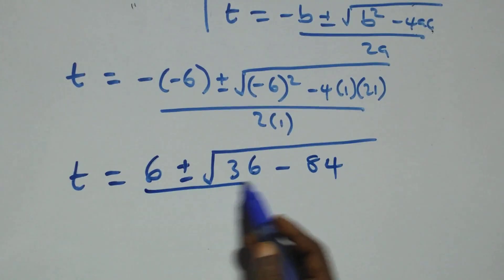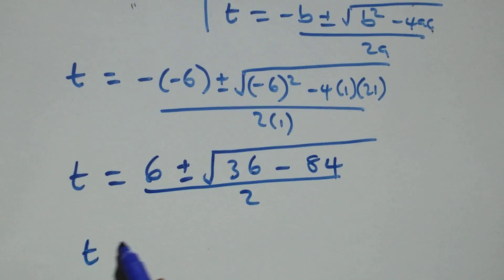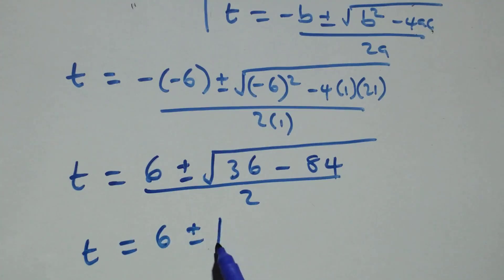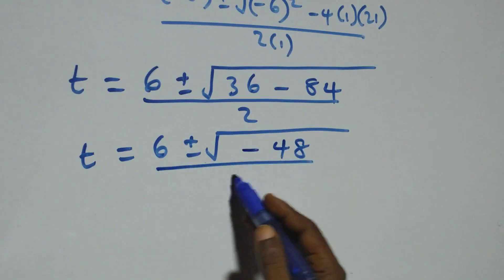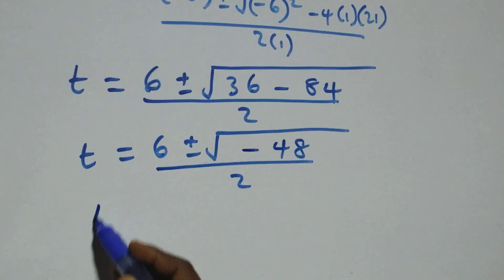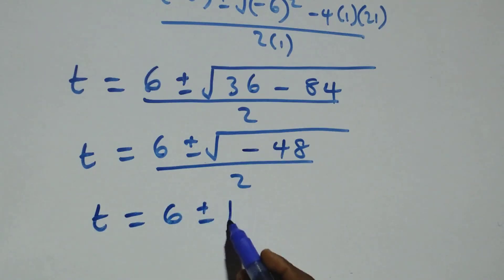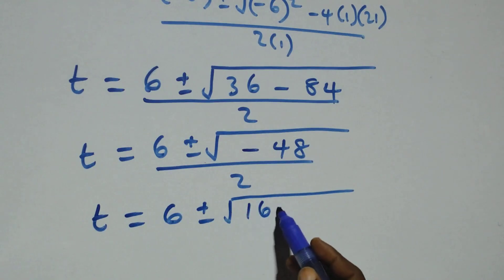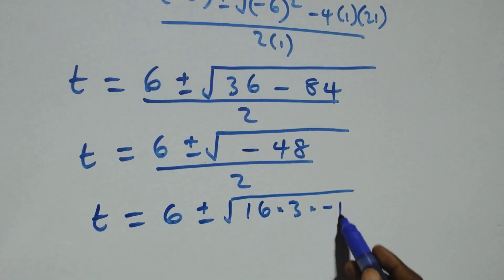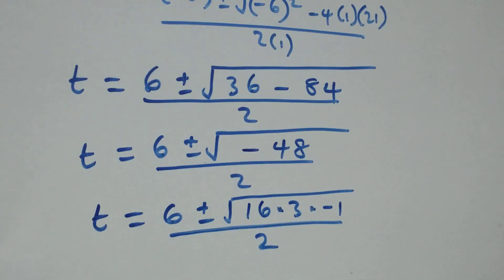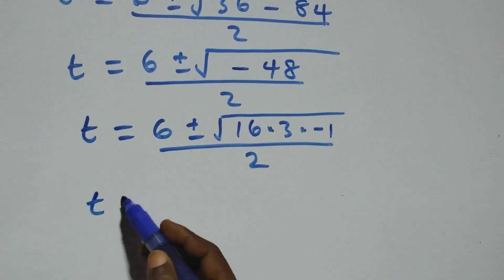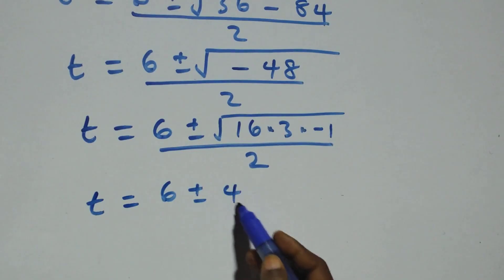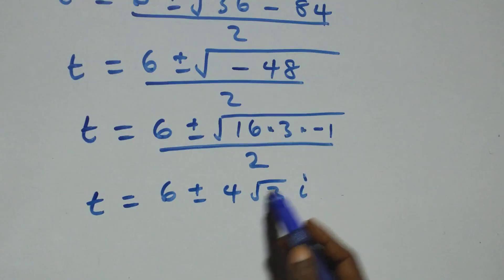This becomes t = (6 ± √(−48)) / 2. We can write −48 as 16 × 3 × (−1). Taking √16 = 4 out, we get t = (6 ± 4√3 · i) / 2, where √(−1) = i.